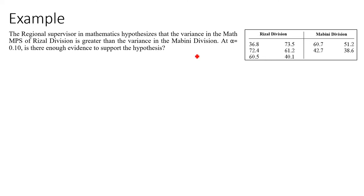Clearly, in this example, this is a sample — the data is taken as a sample from the Rizal division and another sample from the Mabini division. To solve this problem, step one: we are going to state the hypothesis and identify the claim. The regional supervisor hypothesizes that the variance of the math MPS of Rizal division is greater than the variance of the Mabini division. This is the claim of the regional supervisor.